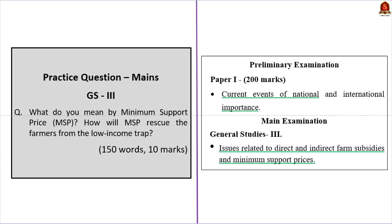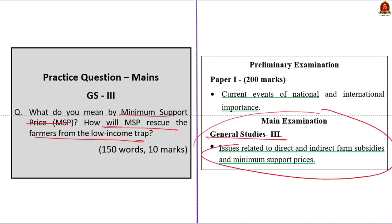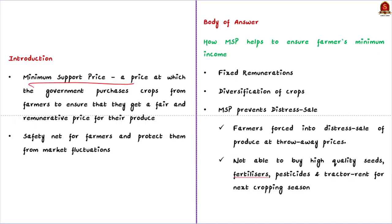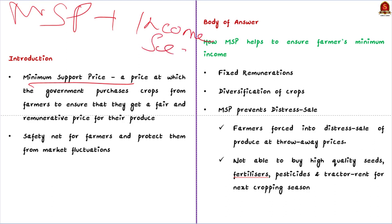We shall understand this topic using our mains answer writing approach. The mains question is: What do you mean by Minimum Support Price? How will MSP rescue the farmers from the low income trap? This is a 150-word, 10-mark question under GS Paper 3. The question demands two things: first, describe what MSP is, and then explain how it helps farmers regarding income security.